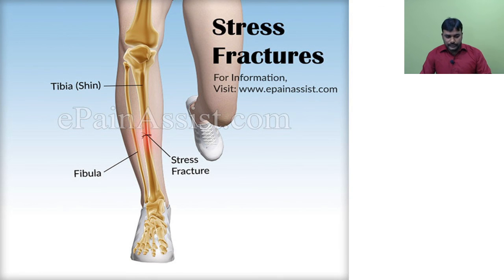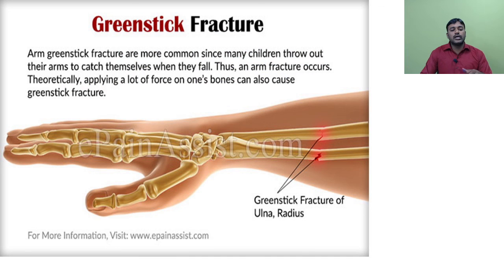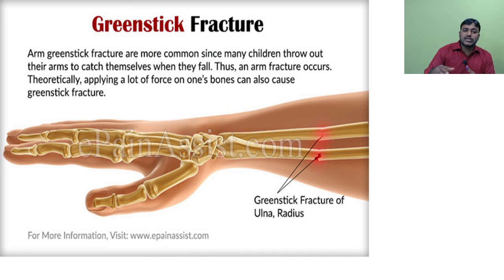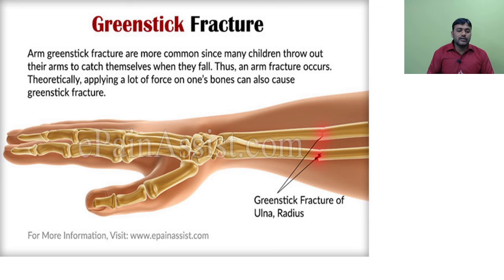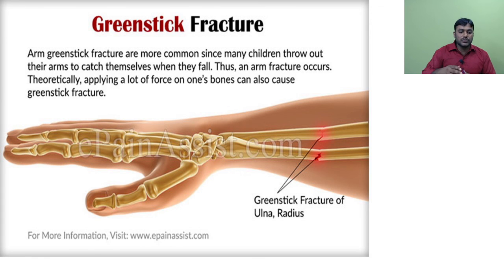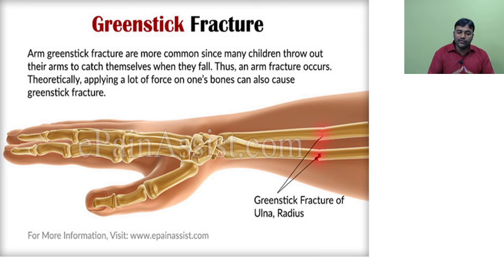Green stick fracture: this type of fracture generally occurs in children; the bone does not break completely. Arm green stick fractures are common since many children extend their arms to catch themselves when they fall. Applying a lot of force to one's bones can also cause a green stick fracture.